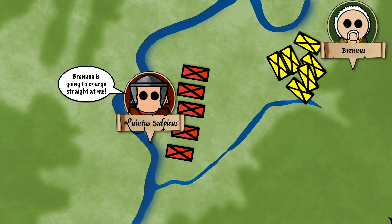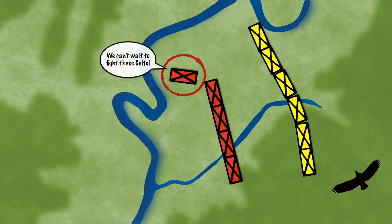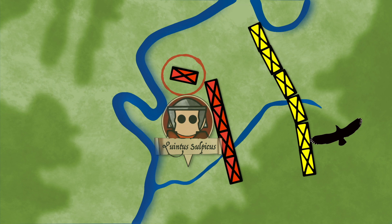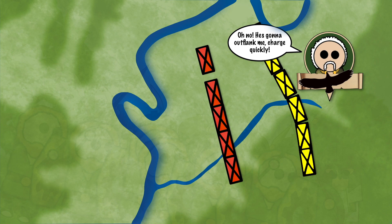Sulpicius expected Brennus to charge straight at them, so he positioned his phalanxes along the plain to engage the horde. However, Sulpicius also had a large number of inexperienced troops, and he decided to place them in reserve on the right flank on a small hill. Brennus, fearing being outflanked by the Roman reserves, ordered his best warriors to stream up the hill and attack the Roman reserves first.